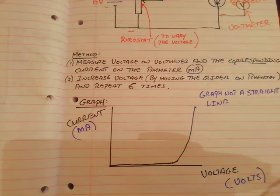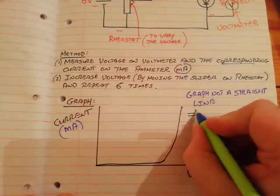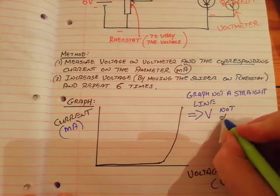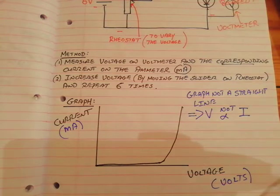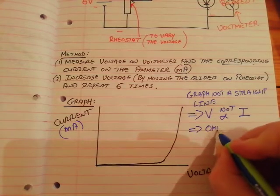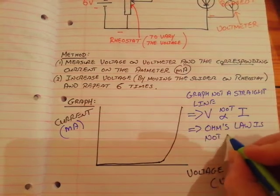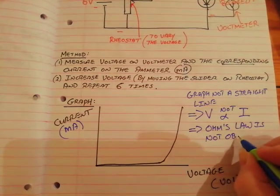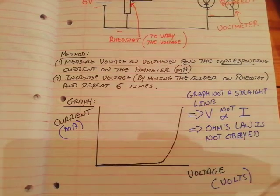The graph is definitely not a straight line. That tells us that voltage is not directly proportional to current. And if voltage is not directly proportional to current for the semiconductor diode, that tells us Ohm's law is not obeyed. A semiconductor diode does not obey Ohm's law.